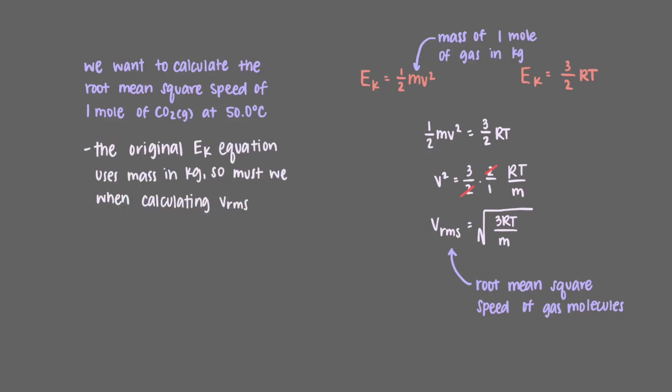Because the original kinetic energy equation uses mass in kilograms, so must we when calculating the root mean square speed. Therefore, the correct value is 0.04401 kilograms per mole.